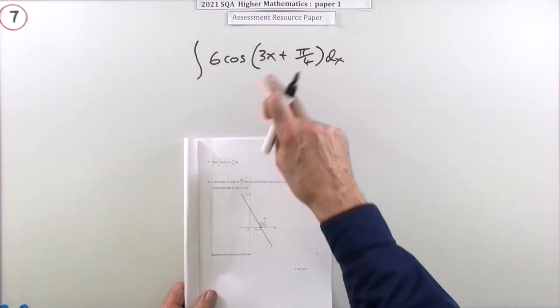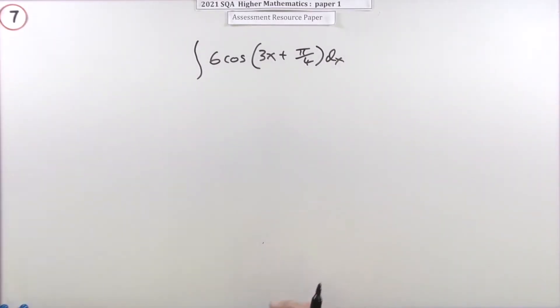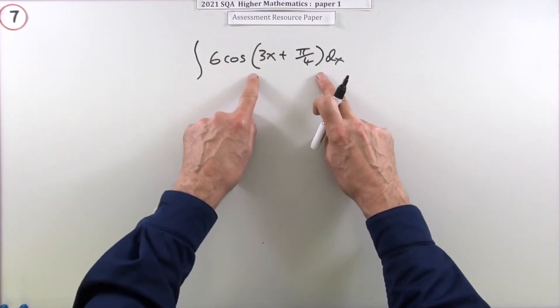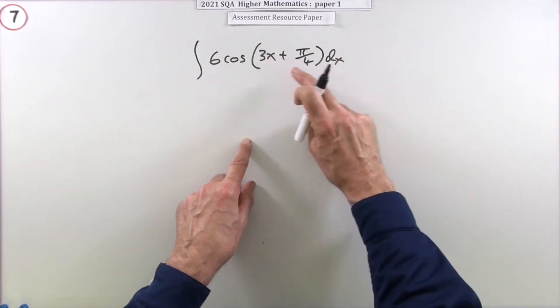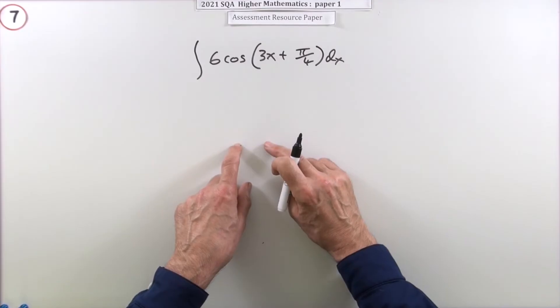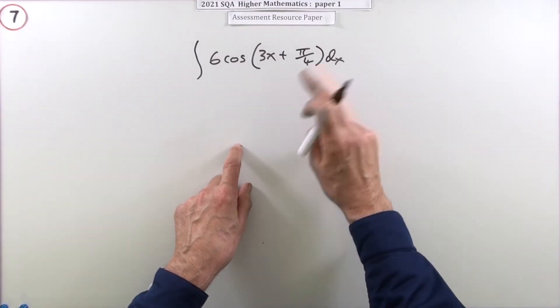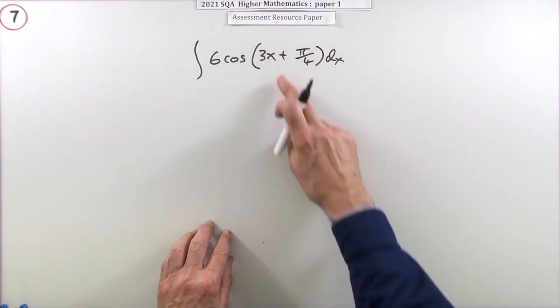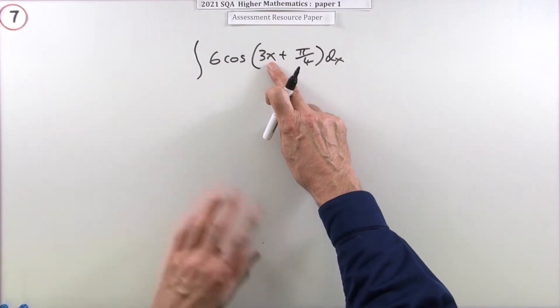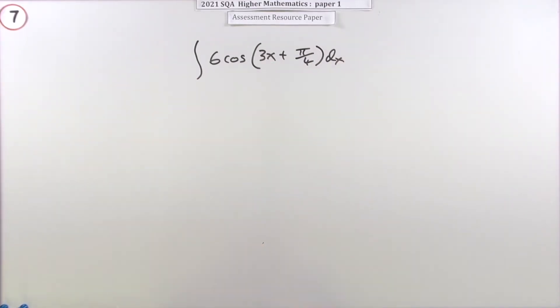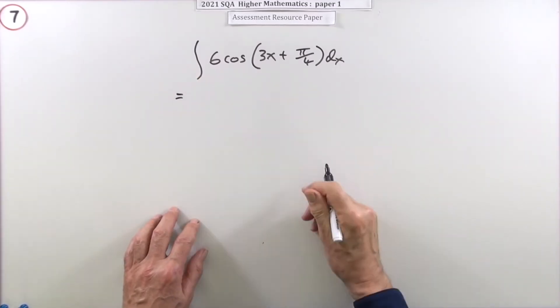Now you can differentiate anything in a bracket, but when it comes to integration at higher level, you can only integrate it when the part, the expression inside the bracket is linear. That means it looks like the equation of a line. It's only got an x in it, not an x squared or a square root or anything like that.